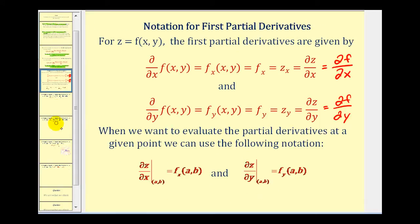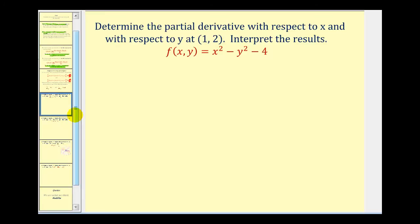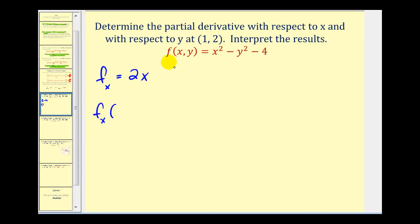Let's go ahead and take a look at some examples and then look at the results geometrically. Here we want to determine the partial derivative with respect to x and y at the point (1, 2). To find the partial derivative of f with respect to x, we differentiate with respect to x, treating y as a constant. The derivative of x squared is 2x, the derivative of y squared is zero, and the derivative of 4 is zero. Now we'll evaluate this partial derivative at the point (1, 2).